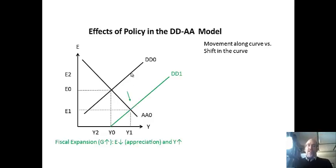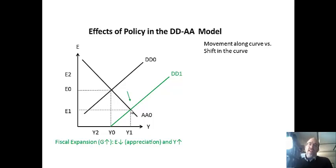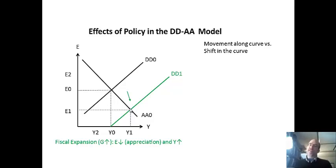First, shifting DD through a fiscal expansion: more government spending all else equal leads to higher GDP. We also see that it leads to a stronger currency, because government spending raises rates, raises the rate of return, and strengthens the currency — increasing demand for assets the government might be borrowing. What this model shows is that fiscal expansion will strengthen the currency as it raises GDP. So the effects of a fiscal expansion are an increase in GDP and an appreciation of the currency.